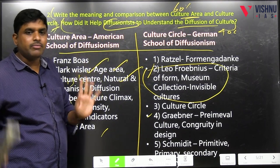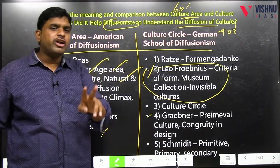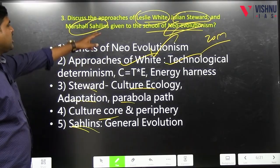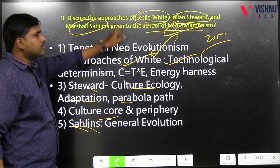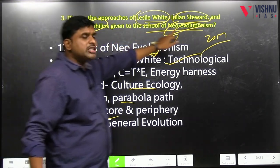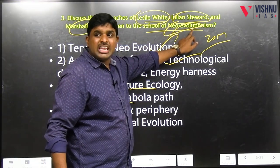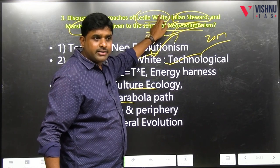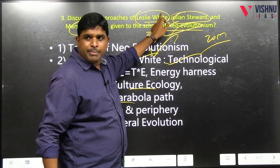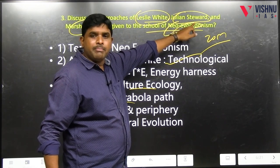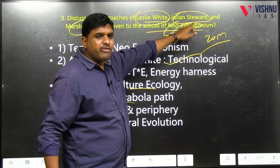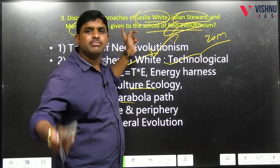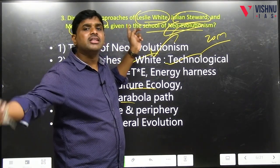Means four pages: two and a half pages for the concept, one and a half for applications. For neo-evolutionism — 20 marker: three-fourths of first page for introduction/tenets of neo-evolutionism; Leslie White: one page; Julian Steward: one and a half pages; Sahlins: half page; criticism: another half page; then conclusion.